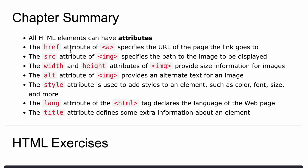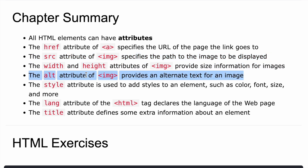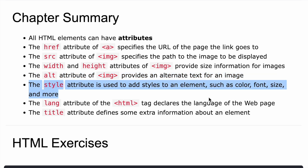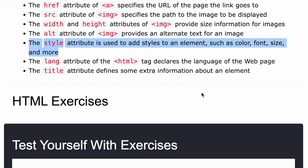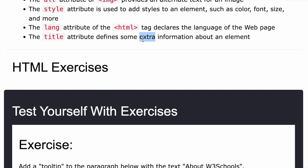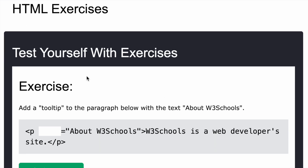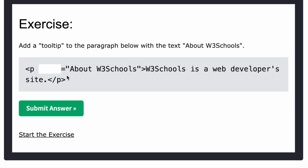Chapter summary: HTML elements can have attributes. The href attribute of 'a' specifies the URL. The src attribute of img specifies the path to the image. Width, height, and alt are also attributes of img. The style attribute adds styles like color and font size. The lang attribute of HTML declares the page language, and the title attribute gives extra information as a tooltip. That's all for this video — in the next video we'll discuss HTML headings.